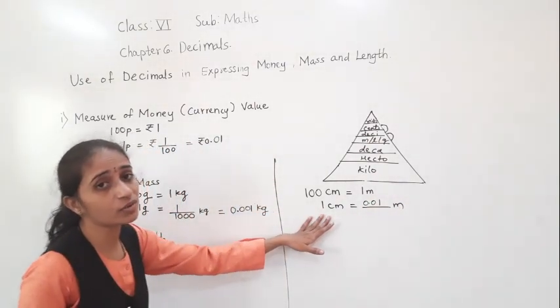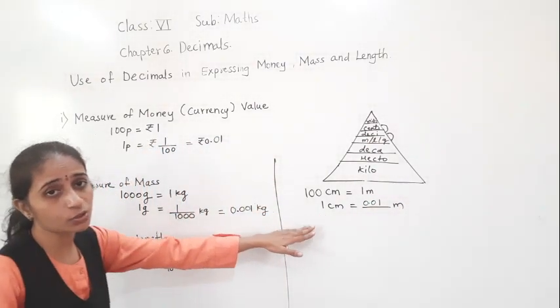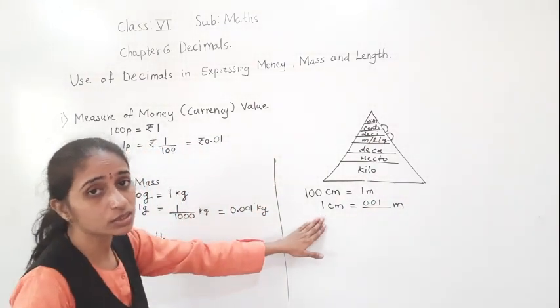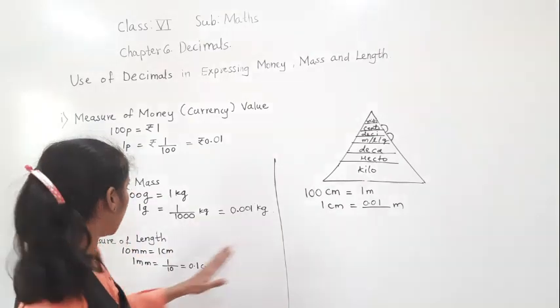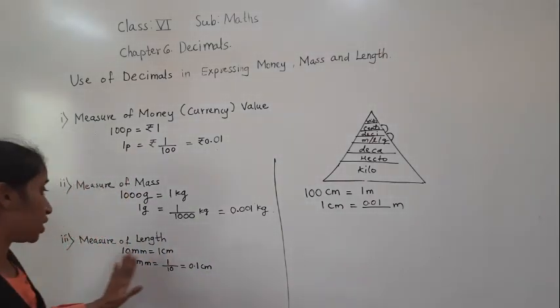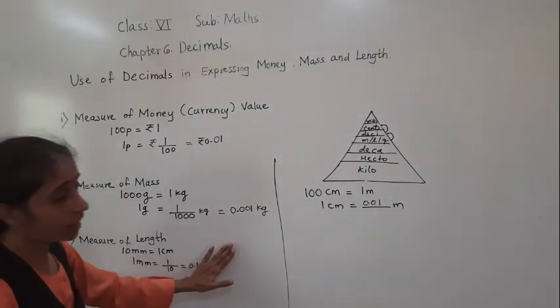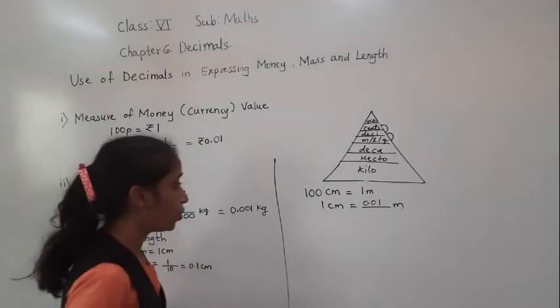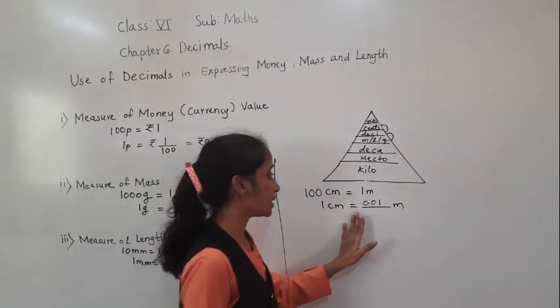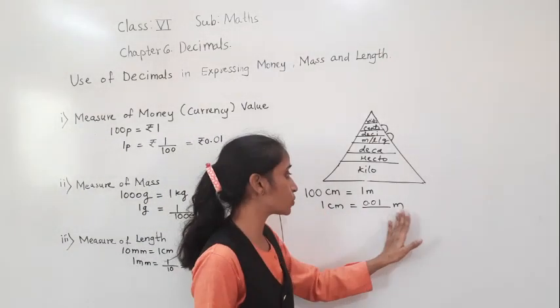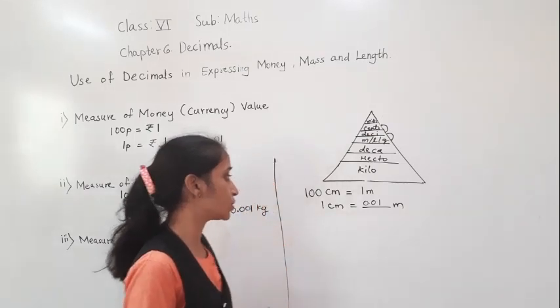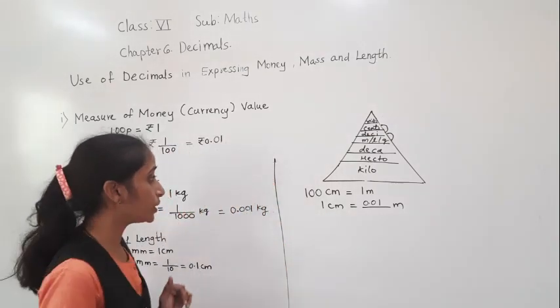So what I am explaining here is that in measurement of length also, we are using the decimal point. 1 centimeter is equal to 0.01 meter.